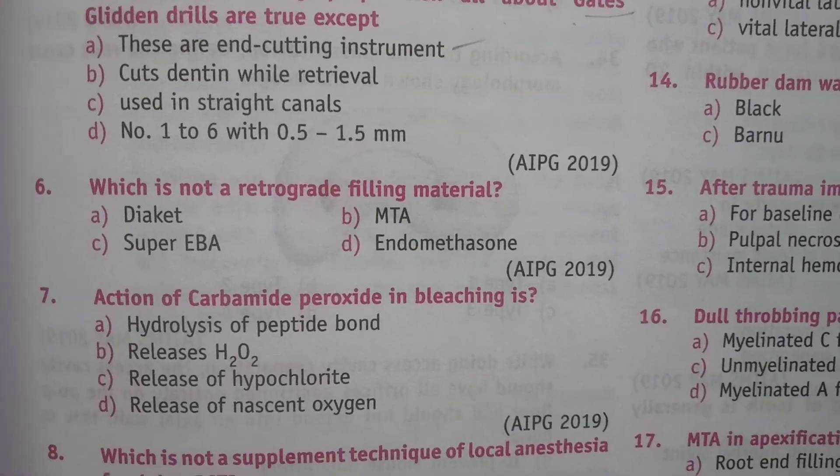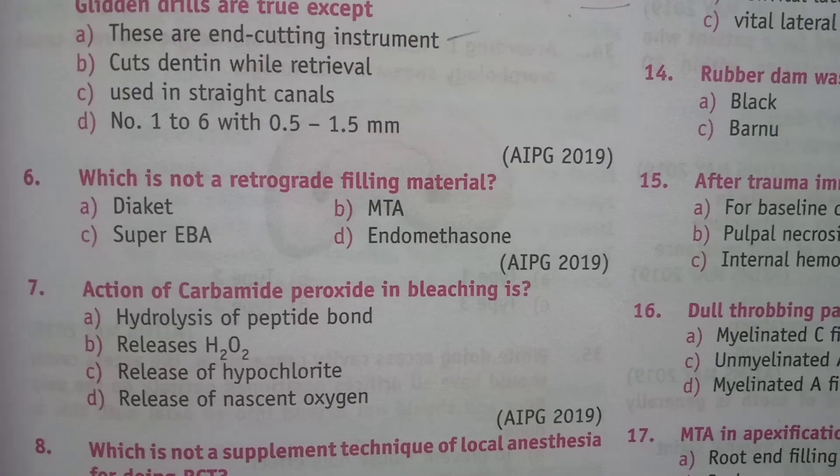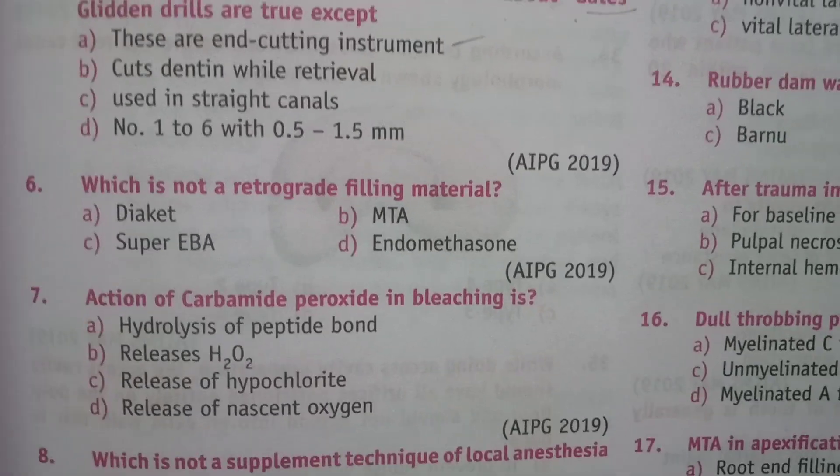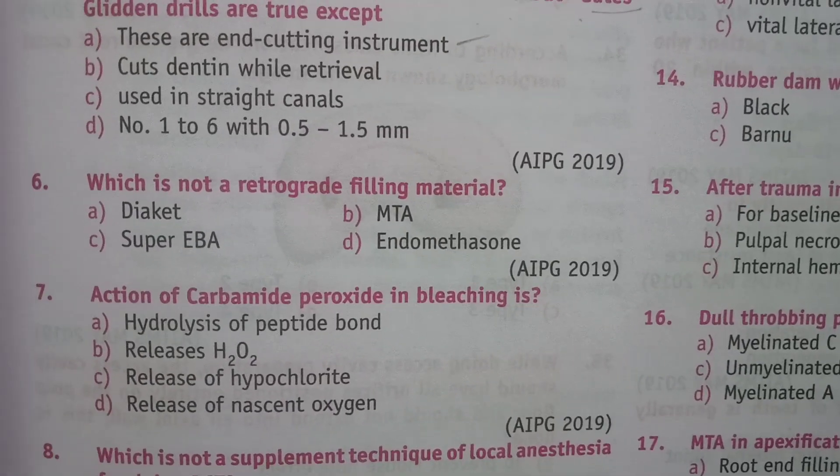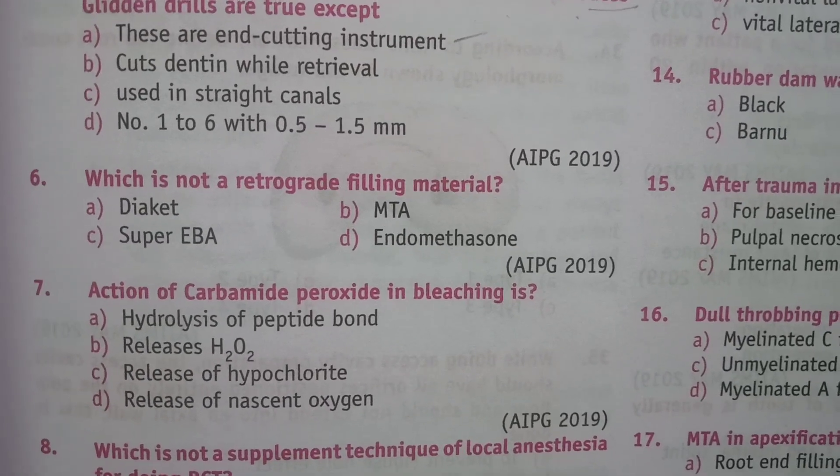Action of carbamide peroxide in bleaching: the answer is release of H2O2.